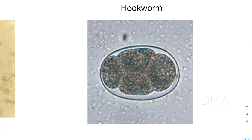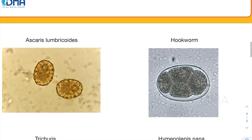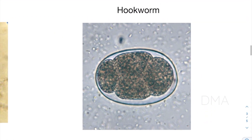Next, let's take a look at hookworm eggs. When we say hookworm, I mean Ankylostoma duodenale, Necator americanus, and Ancylostoma ceylanicum. The hookworm egg is clearly distinguishable from Ascaris lumbricoides — it is a non-bile stained egg, has a thin outer wall, and has a segmented ovum. You can also notice that there is a clear space between the ovum and the outer wall.